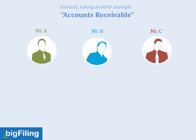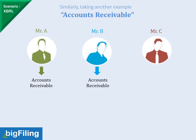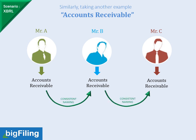Again we will change scenario from before XBRL to after XBRL, keeping the same example of accounts receivable. Mr. A shall name it as 'accounts receivable,' Mr. B shall also name it as 'accounts receivable,' and Mr. C also has to name it as 'accounts receivable.' Again you can see under XBRL all the professionals shall use the same standard names. Therefore, within the same industry or same geography, comparison can easily be done.